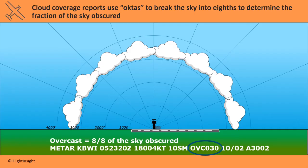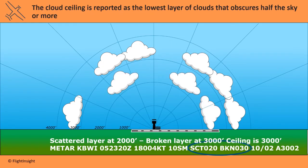METARs can report multiple layers. Here we have a scattered layer at 2000 feet and a broken layer at 3000. A cloud ceiling constitutes the lowest layer of clouds that cover at least half the sky — so that would be a broken or overcast layer. Here the ceiling is 3000 feet, even though scattered clouds exist below that.